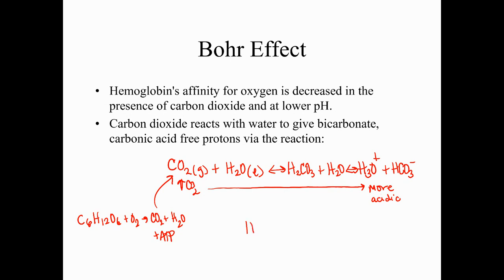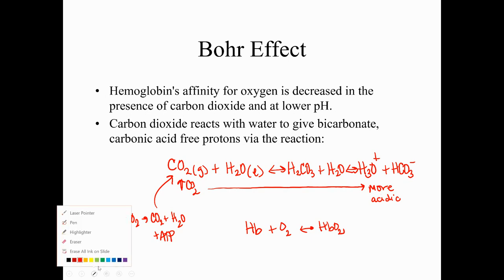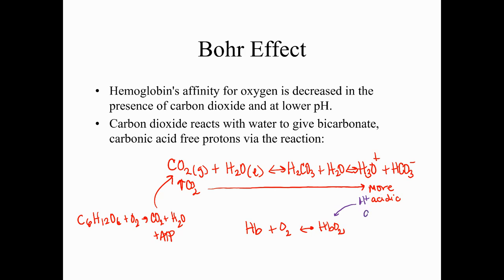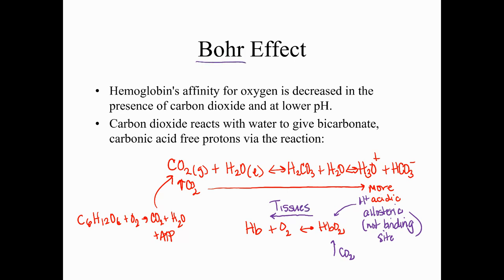This increased acidity affects the hemoglobin equilibrium between bound and unbound states. H+ will bind to hemoglobin that already has O2 bound, but at an allosteric site — not the heme binding site. CO2 can also bind to hemoglobin. Both create conformational changes so that the iron shifts, the heme group shifts, and oxygen is released in the tissues. This is called the Bohr effect.